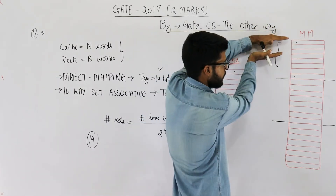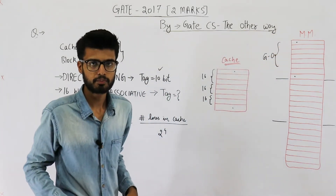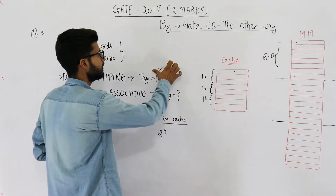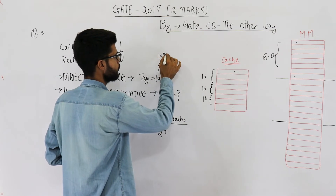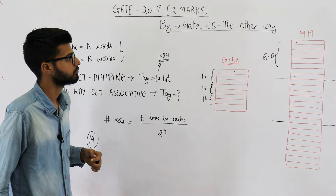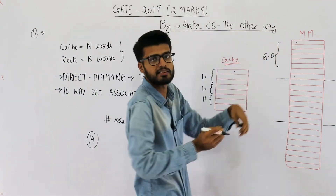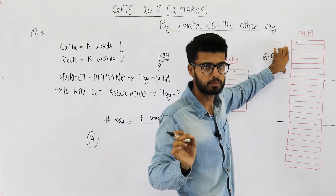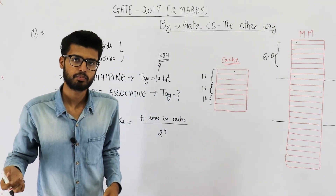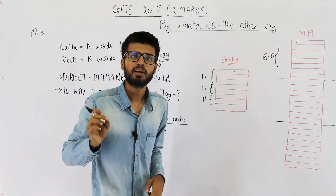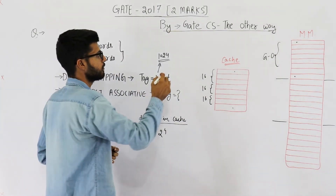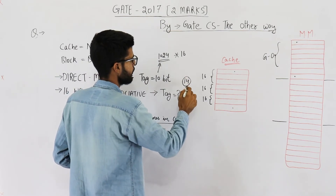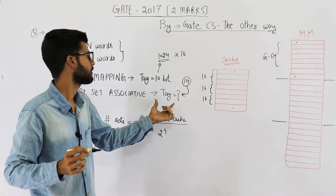If one group contains fewer blocks, the total number of groups will increase. The tag is used to identify a group. Earlier with a 10-bit tag there were 1024 groups. Since each group now contains 16 times fewer blocks, the total number of groups increases by 16 times. Multiplying by 16 and taking the log base 2 gives 14 — so a 14-bit tag is required for 16-way set associative mapping.